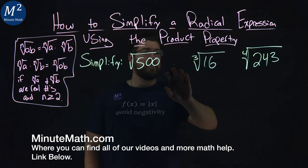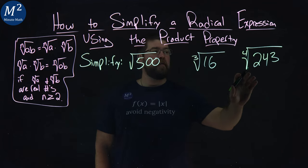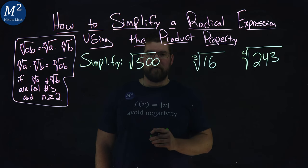We're going to simplify square root of 500, the cube root of 16, and the fourth root of 243.